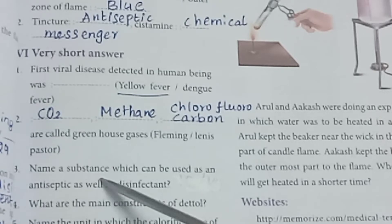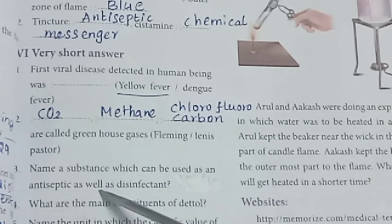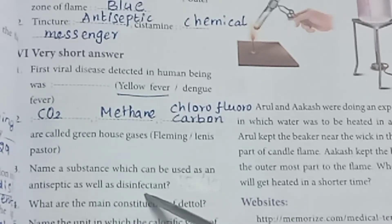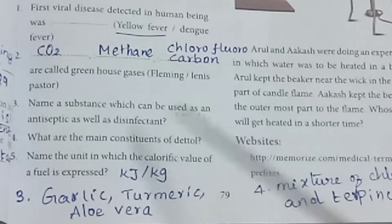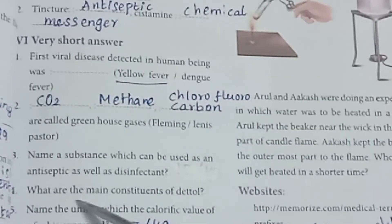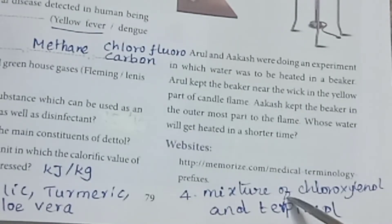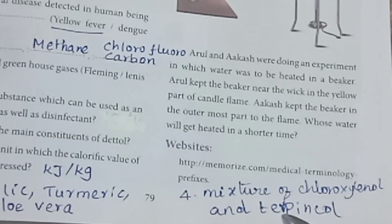Third: Name a substance which can be used as both an antiseptic and a disinfectant. Answer: Garlic, turmeric, and olive oil. Fourth: What are the main constituents of Dettol? Answer: A mixture of chloroxylenol and terpineol.